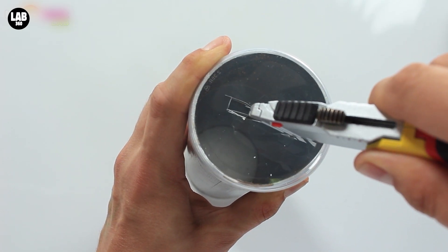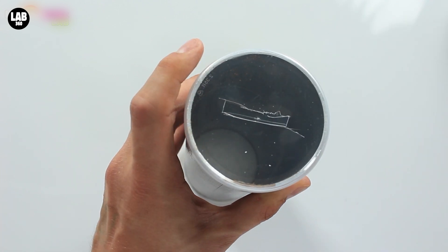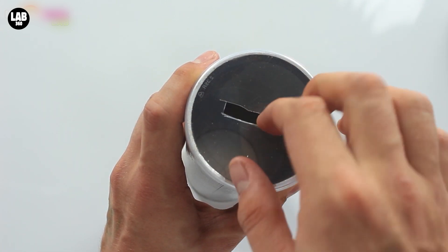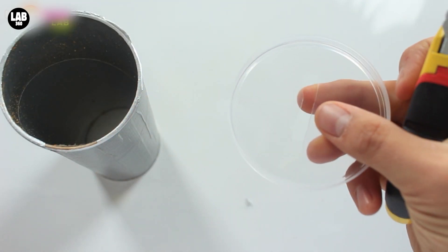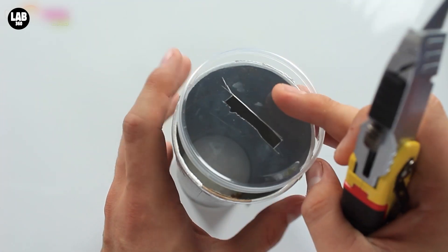I found that the best way to do this was to score the plastic first and then to cut more heavily a second time. Remove any excess plastic and replace the lid.